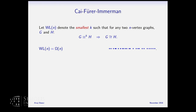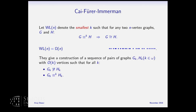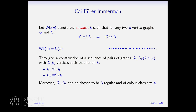n^{O(n)} is essentially the same order as n factorial — you may as well try all possible permutations. We already knew before Babai's recent breakthrough that you can do better: 2^{sqrt(n)}, and now we know 2^{polylog n}. The CFI construction gives pairs of graphs with order-k vertices which are non-isomorphic but k-WL-indistinguishable; these can be chosen to be 3-regular with color class size.